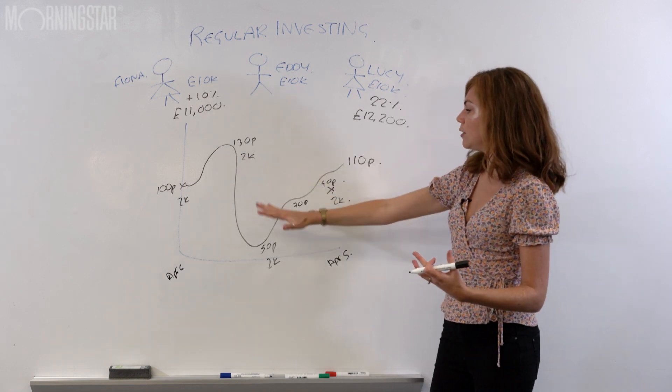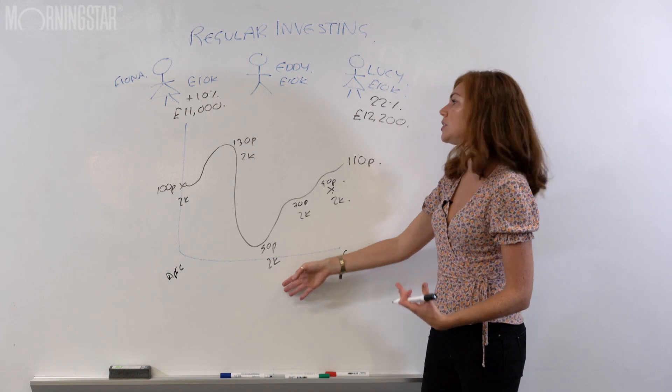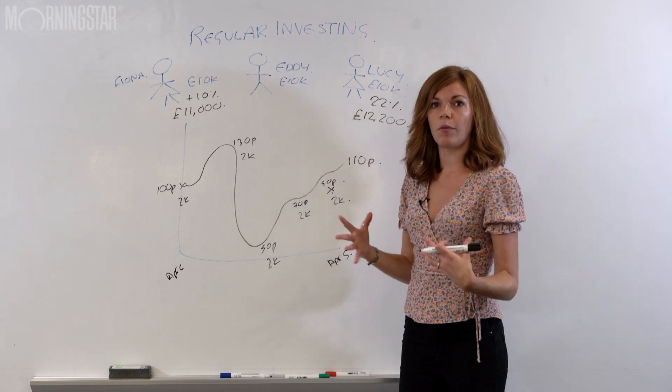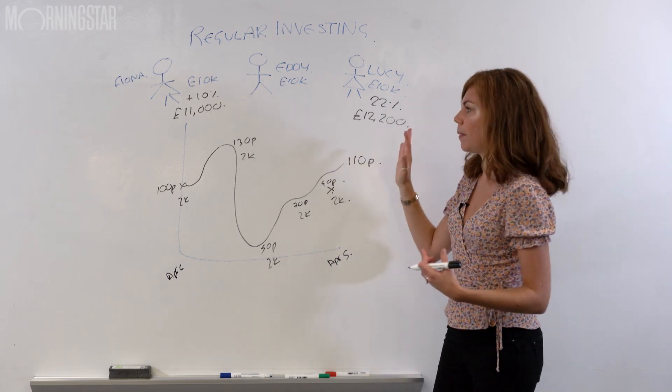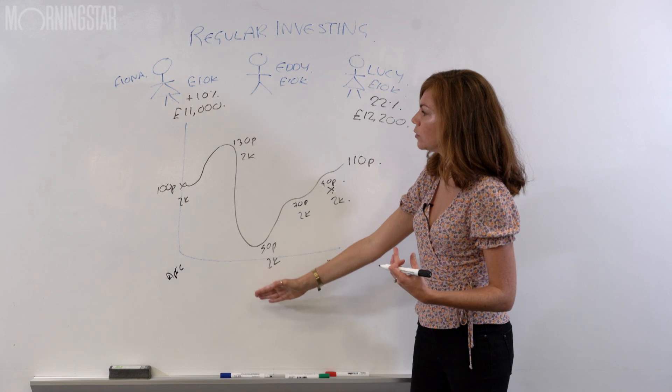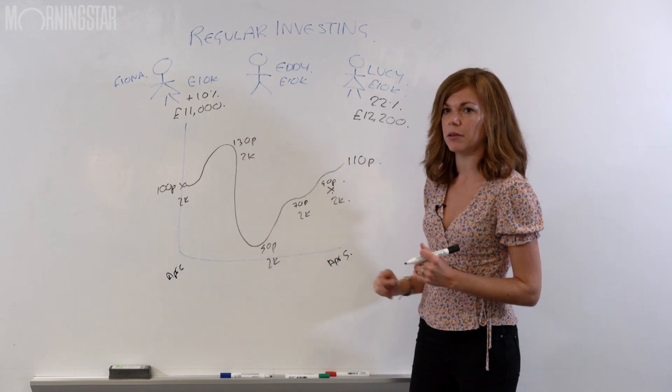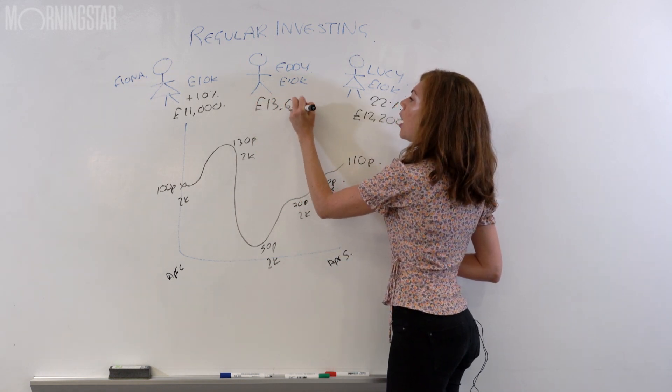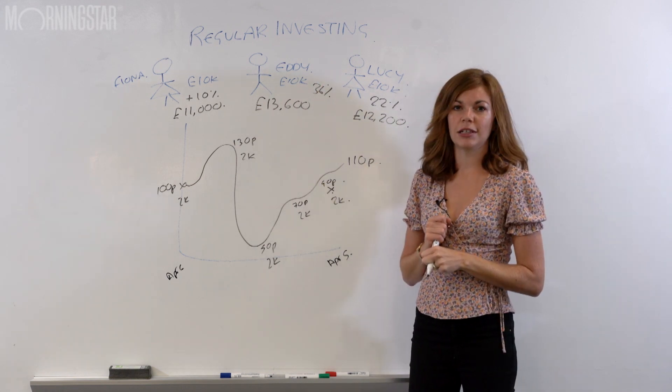even though he's invested at all different points, he's bought more shares with his money when they were cheapest. He's bought fewer shares when they were at their most expensive. And that works out to give him a steadier ride overall when he hasn't had to think about it. He could just focus on stockpiling toilet rolls during this time rather than worrying about when he was going to put his money in the market. And Steady Eddie has ended up 36% up at £13,600.